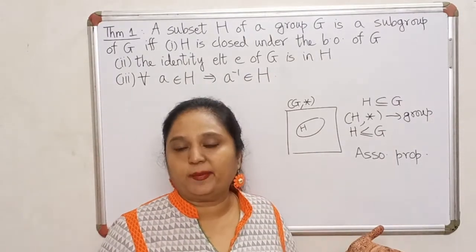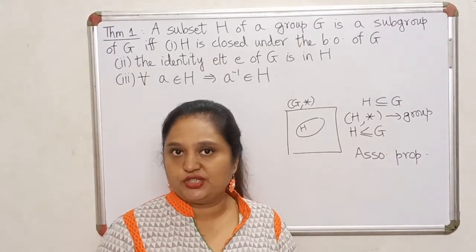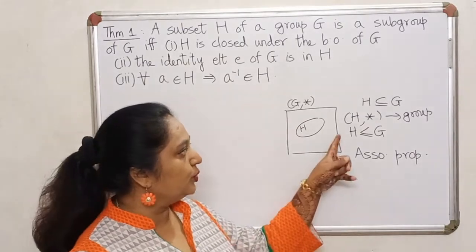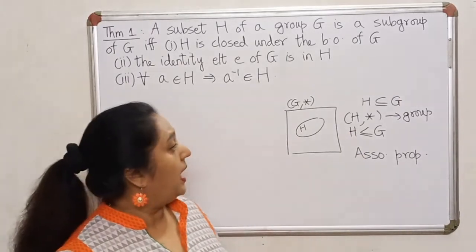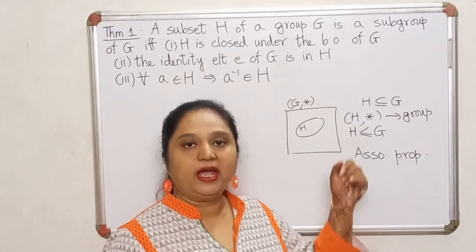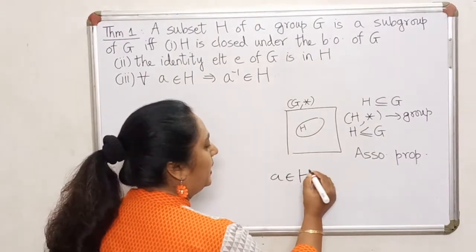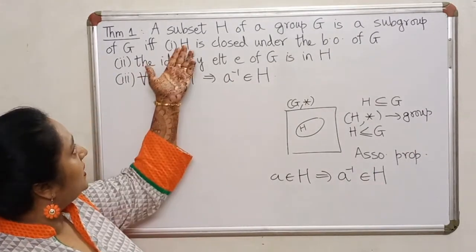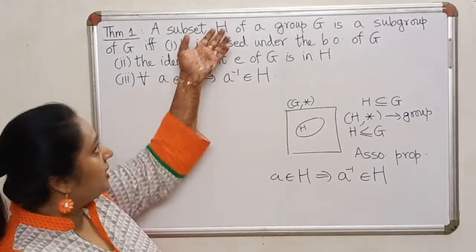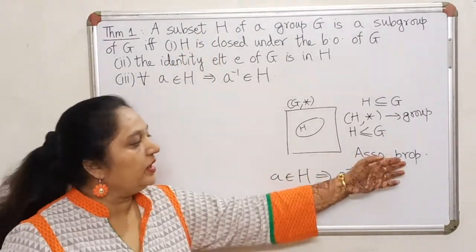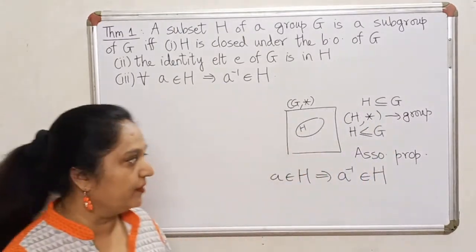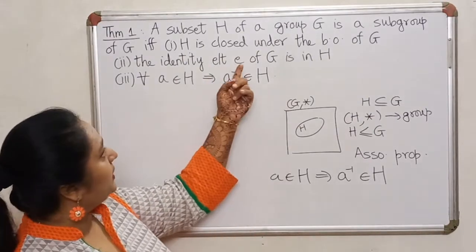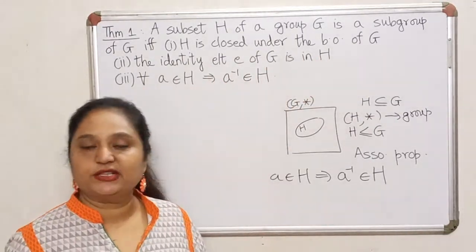This reduces my work by 25%. If I want to show H is a subgroup of G, I don't have to worry about the associative property anymore. The remaining properties I need to prove are: closure property is satisfied for H, the identity lies inside H, and whenever I take an element in H, the inverse of that element is also in the same set. That is precisely what is stated in these three properties of the theorem.